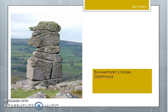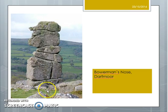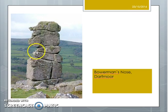Starting with our example of Bowerman's Nose, which is on Dartmoor. This is a granite tor. We can see here that the granite is higher than the surrounding landscape, and we've got these joints here in the form of a characteristic morphology of a granite tor.